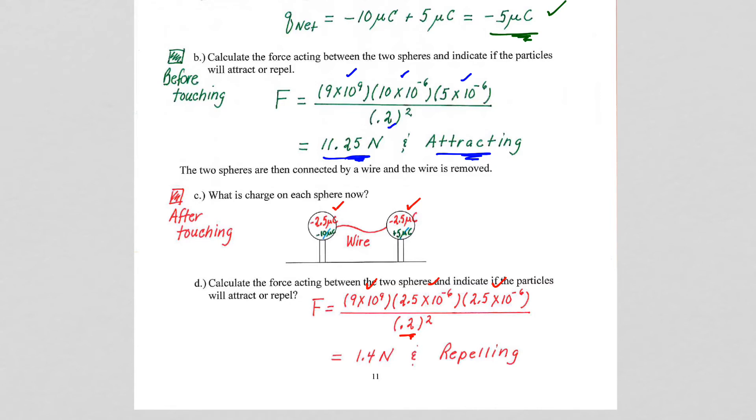Notice now we have a much different situation relative to the force. The total charge on the system remain the same, negative 5 microcoulombs, but look at the difference in the force. We went from a force of 11.25 to a force of 1.4, so almost an order of magnitude smaller, and not only is it much smaller, it's now repelling, not attracting.